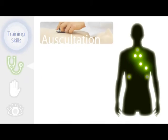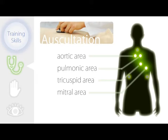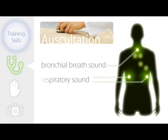A total of 7 points are available for auscultation training, including the aortic area, pulmonic area, tricuspid area, mitral area, bronchial breath sounds, and the respiratory sounds.